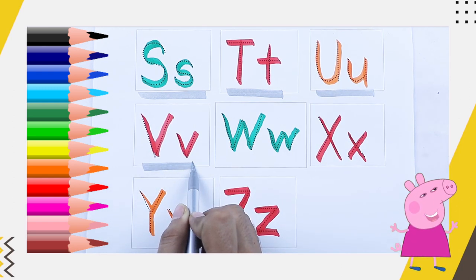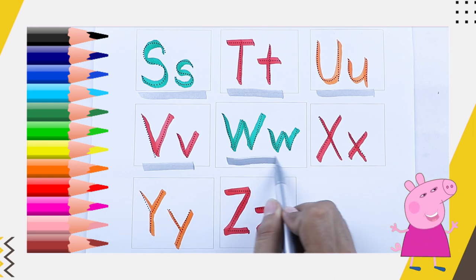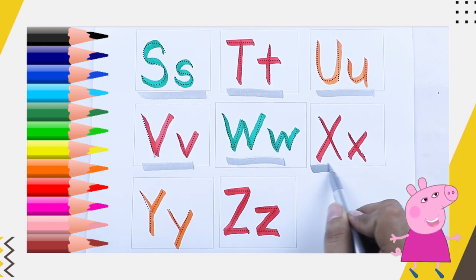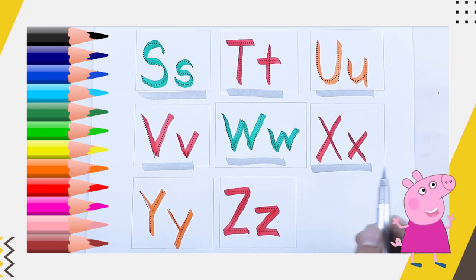Red color V, V for van. Green color W, W for watch. Red color X, X for Xmas tree.